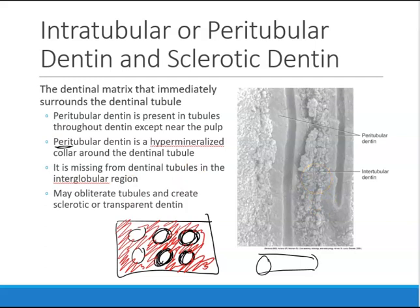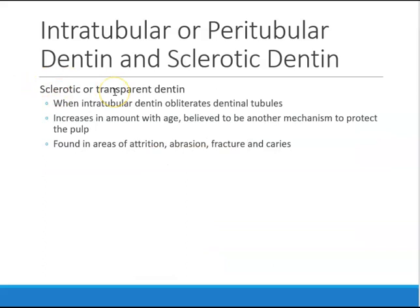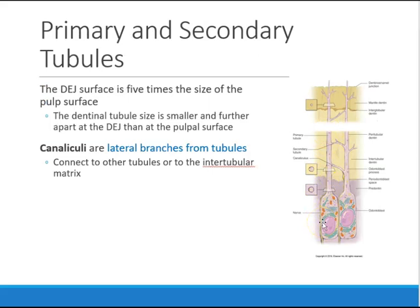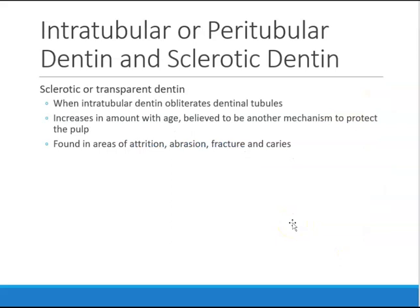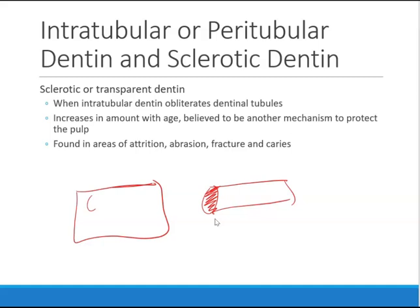Sometimes you can get sclerotic or transparent dentin. When you look at the dentinal tubules, sometimes they get plugged — this happens with age or trauma such as grinding, aggressive brushing, a fractured tooth, or a cavity. In response, the dentinal tubules get plugged. When those holes get clogged, it is known as sclerotic or transparent dentin.